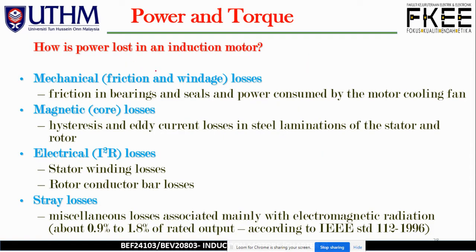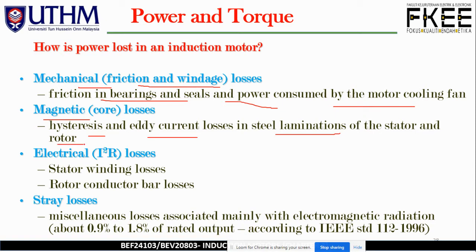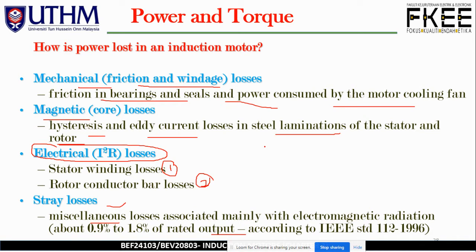To summarize power losses in an induction motor: friction and windage losses occur from the shaft and bearings and power consumed by the motor cooling fan. Magnetic core losses are due to hysteresis and eddy current losses in the steel lamination of the stator and rotor. Electrical I²R losses consist of stator winding losses and rotor conductor bar losses. Finally, stray or miscellaneous losses associated mainly with electromagnetic effects are about 1% to 1.8% of rated output, according to IEEE standard 112-1996.